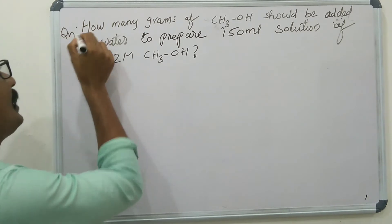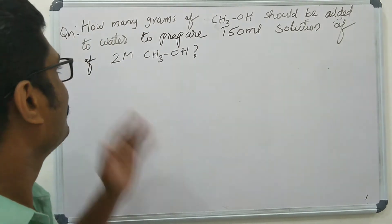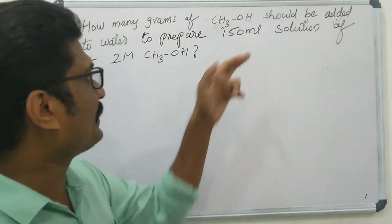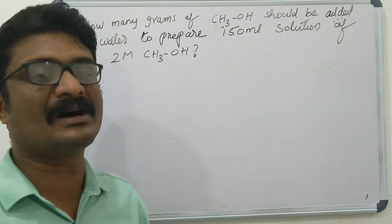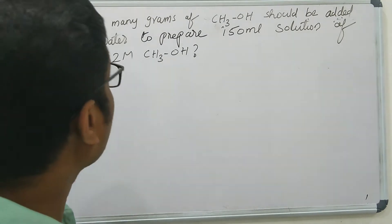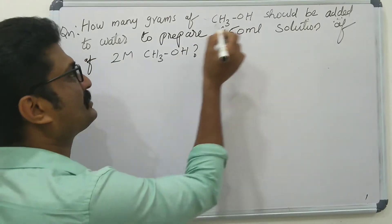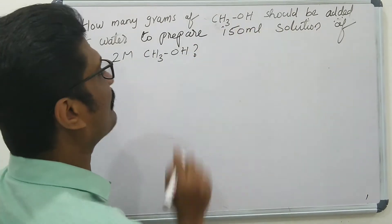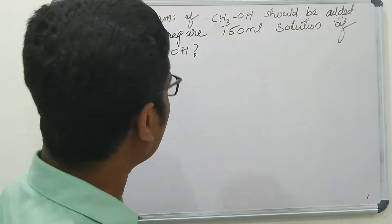How many grams of CH3OH should be added to water to prepare 150 ml solution of 2 molar CH3OH?